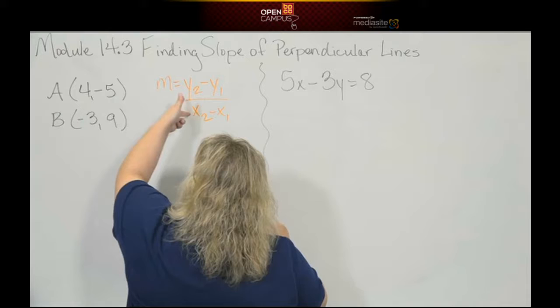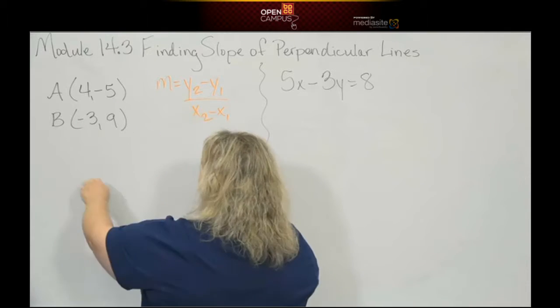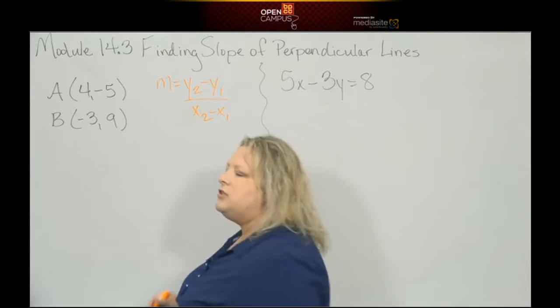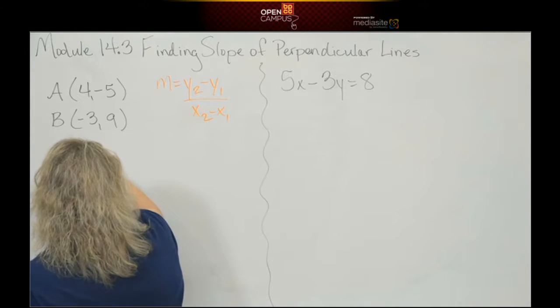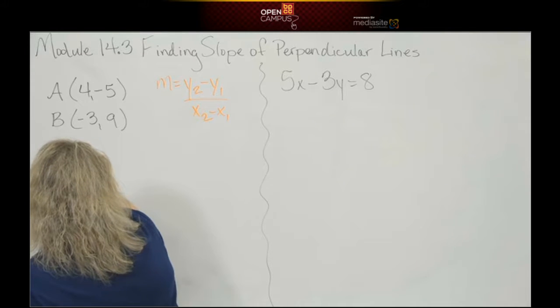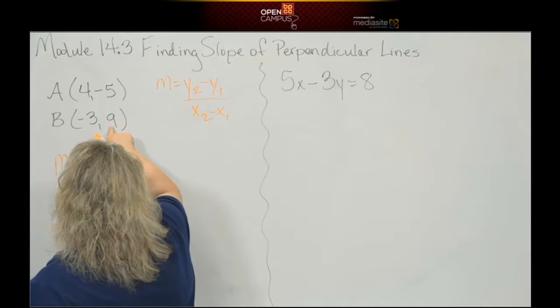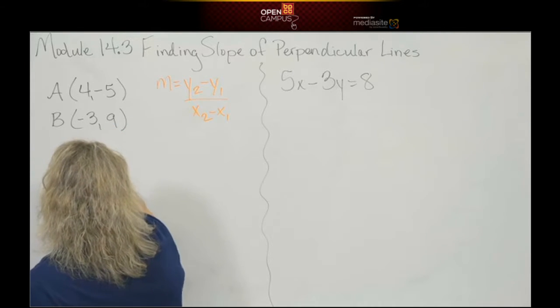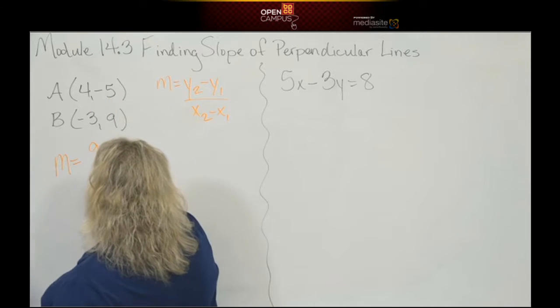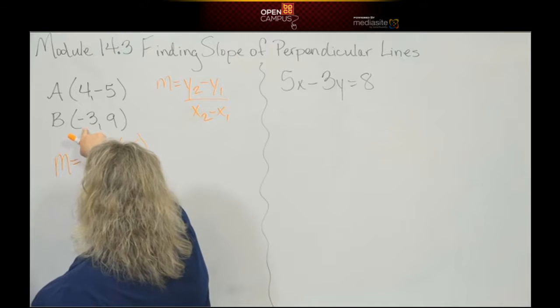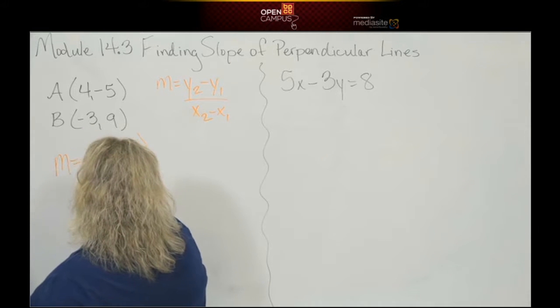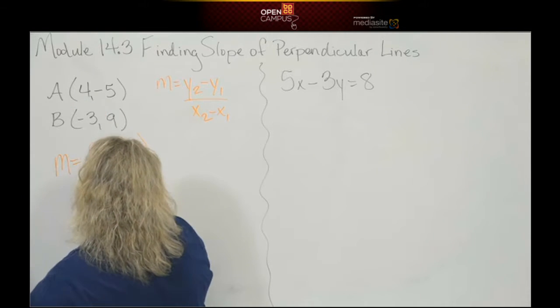And then again, when you plug your points in, remember that whatever ordered pair you pick, the x and the y go under each other. This time I'm going to put B first just so that you can see me do something else. So I have m is equal to y2, let's make it 9, minus y1 which will be negative 5, over x2 which will be negative 3 minus x1 which is 4.